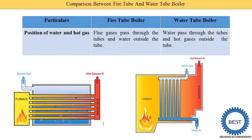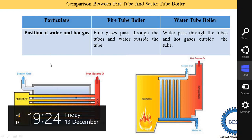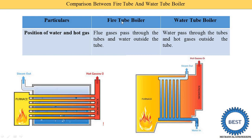The first point is on the basis of positions of water and hot gases. The first column is for particulars, second column is for fire tube, and the third column is for water tubes. So, positions of water and hot gas: here is one boiler — this is the boiler shell, inside this boiler there is a tube and a furnace. Hot gases from the furnace are supplied inside the tube, and water is outside the tube or it is in the shell. This boiler is known as the fire tube boiler — whatever is fire, it is inside the tube. Flue gases pass through the tube and water is outside the tube.